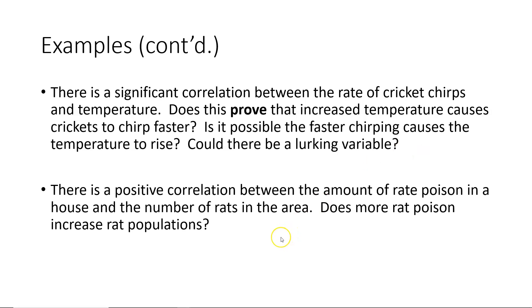In the last example, there is a positive correlation between the amount of rat poison in a house and the number of rats in the area. Does more rat poison increase rat populations? That is very foolish. If anything, the cause-and-effect relationship is probably in the other direction: as rat populations increase, people go out and buy more rat poison, which causes an increase in the amount of rat poison. And that completes this presentation.